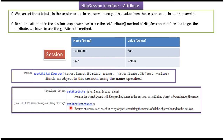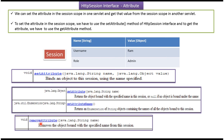Another method is getAttributeNames. When you call this method, it returns all the attribute names — such as 'username' and 'role' — as an Enumeration. Once you get all the attribute names in the session scope, you can iterate and pass each name to the getAttribute method to get the corresponding value. If you want to remove an attribute from the session scope, you can call the removeAttribute method on the session object, which will remove that particular attribute.